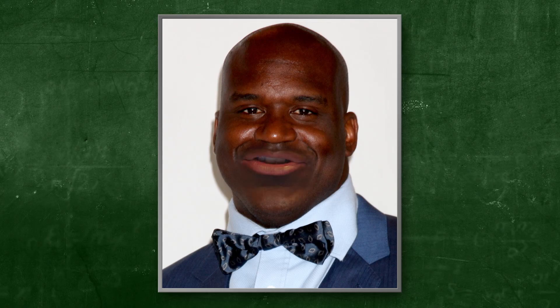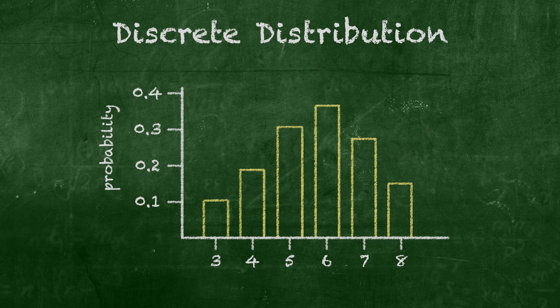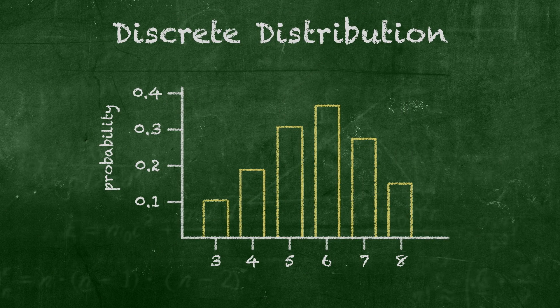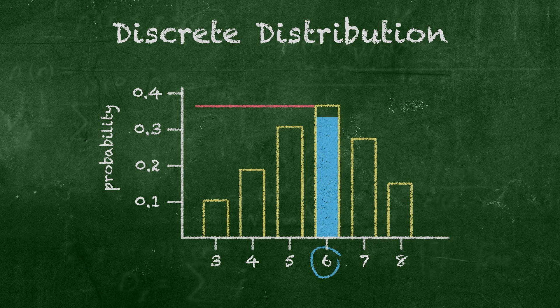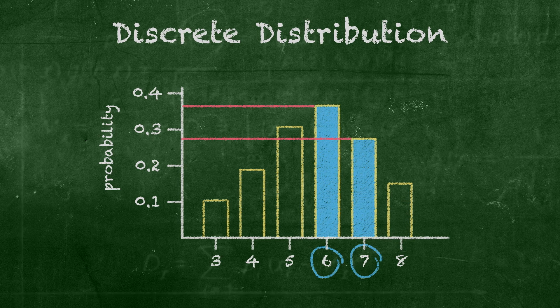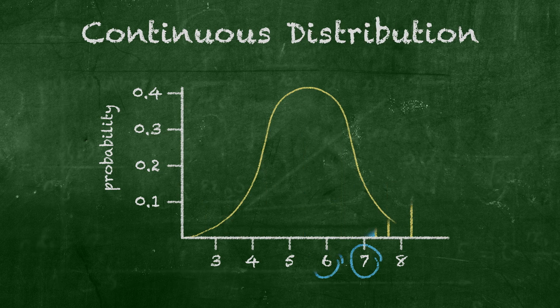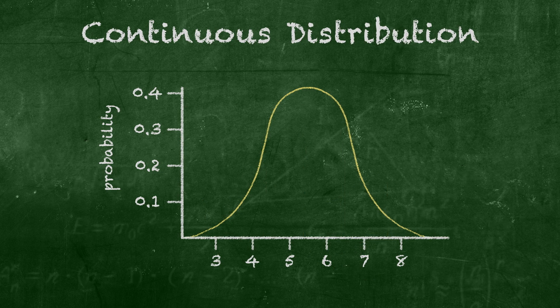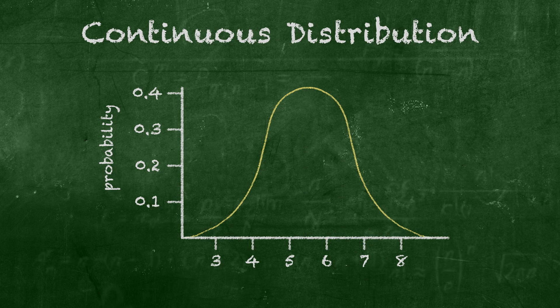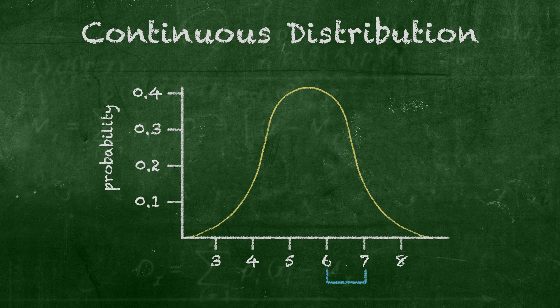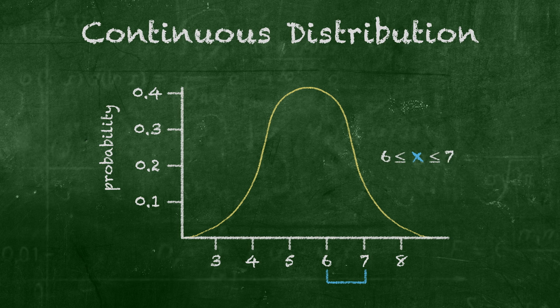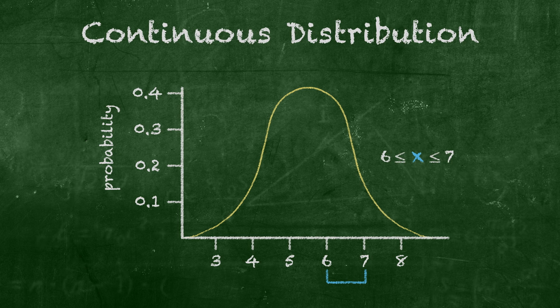One major difference in the way we analyze the two types of distributions is in how we calculate probabilities. For discrete distribution, we can calculate the probability of getting exactly 6 or exactly 7. But for continuous distribution, we need to find the probability of a range of numbers — in this case, the probability of any value between 6 and 7.